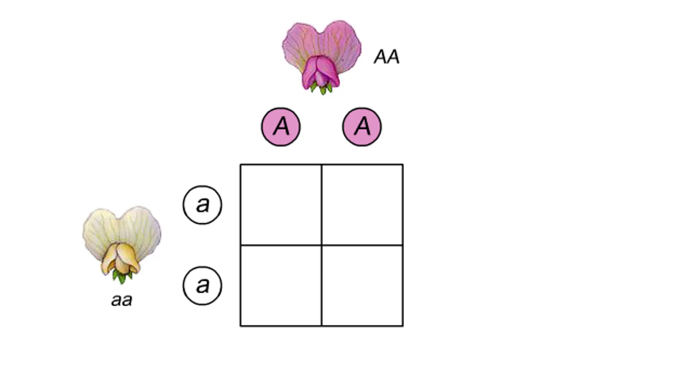A monohybrid cross is a cross between two parents that breed true for different versions of a single trait. In this example, that trait is flower color.